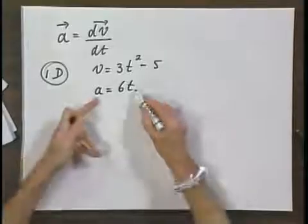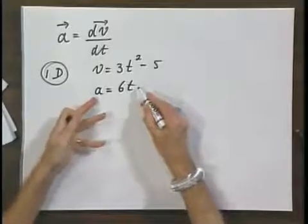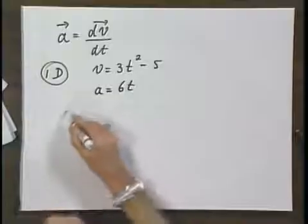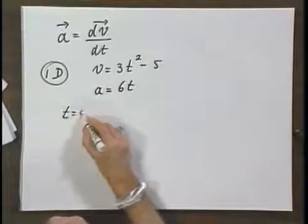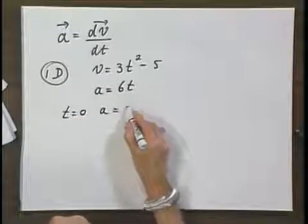And this number could be positive, could be zero, could be negative. In fact, if t equals zero, you will see that the acceleration is zero.